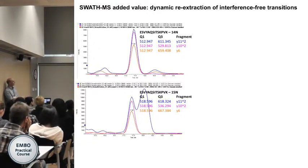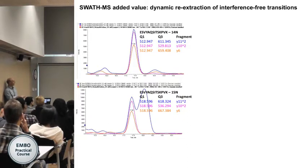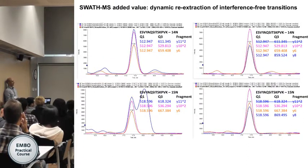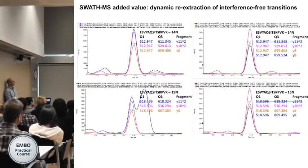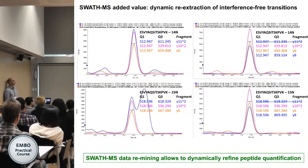Similarly for peptide quantification, if you have strong contamination on the Y11 transition, instead of re-measuring your sample, you simply remove that contaminated transition and pick another one — say Y8 — from your existing data. Then you get clean light and heavy quantification without worrying about contamination. This can all be done dynamically without needing to re-acquire your data.